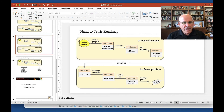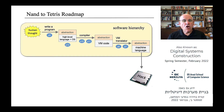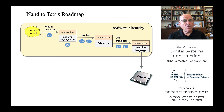Here is the overall roadmap of NAND to Tetris, and once we complete building the hardware platform we go on to construct a modern software hierarchy on top of the HACK computer. In particular, we build a compiler for a modern object-based language called Jack. We develop not only the compiler but also a virtual machine implementation and a basic operating system.